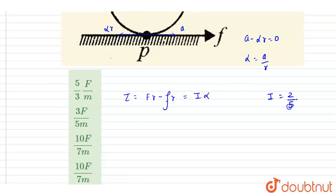Now put the value. I will write down F minus f into r equals two by five m r square a by r. So this will get cancelled out.